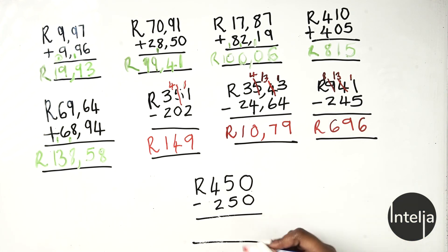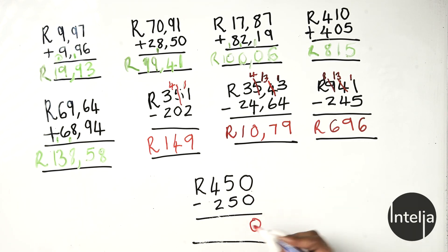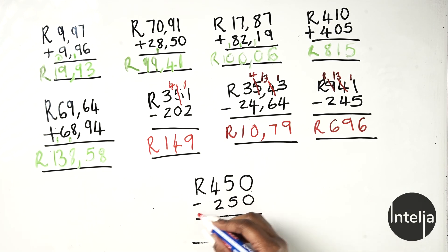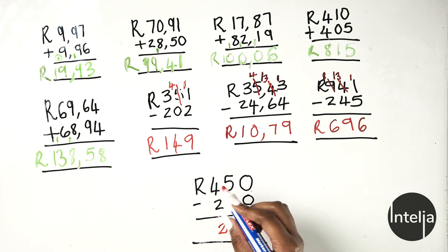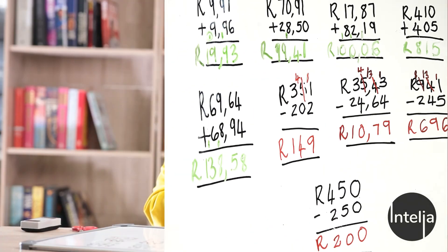Moving on to the final example: 450 minus 250. 0 minus 0 is 0, 5 minus 5 is 0, 4 minus 2 is 2. So 450 minus 250 gives you 200 rands. Thank you so much for paying attention — I hope this was fairly easy and simple. See you next time, bye!